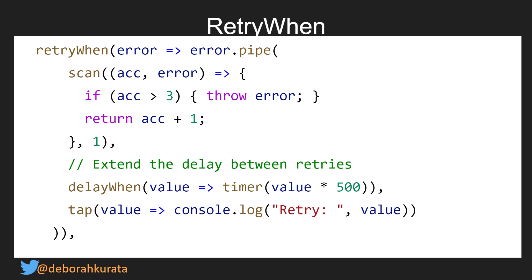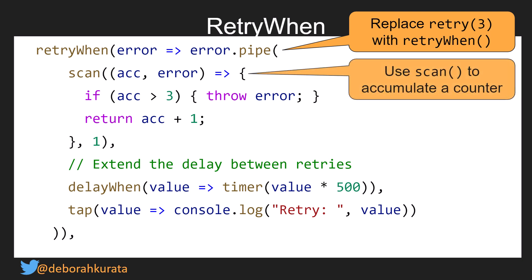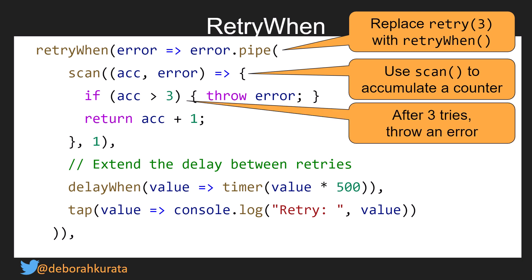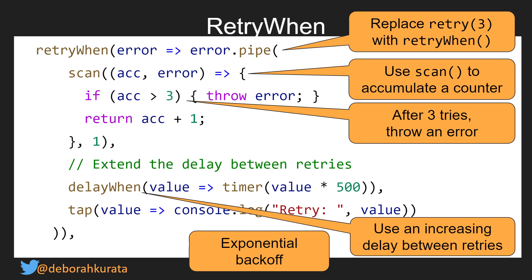For a fancier retry, we can use retryWhen, which is more complicated than retry. Instead of just passing in the number of retries, you pass in all the code defining exactly how you want it to retry. We use scan to accumulate a counter for how many times we're retrying. After three tries it throws an error; for three or fewer tries it increases the accumulator. Then it uses delayWhen with an increasing delay between retries — we take the value times 500, so each time through the delay increases by half a second. This is called exponential backoff.